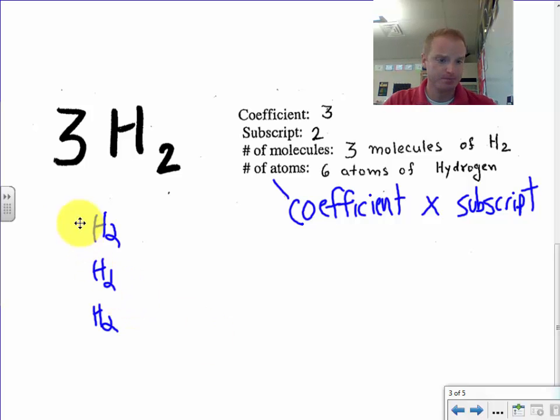So here I've got 3H2. And so let's say my coefficient, and that's that number out in front, is 3. Our subscript is 2.